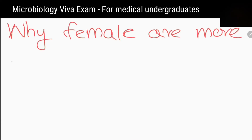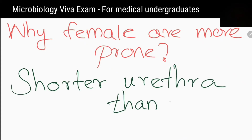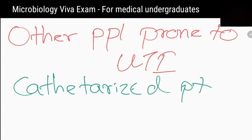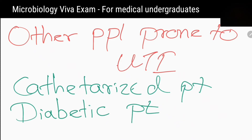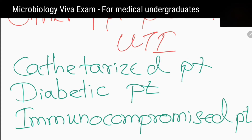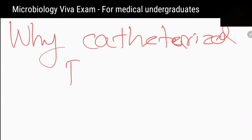Why are females more prone to urinary tract infections? Because the urethra is shorter than in males. Are there any other groups of people who are more prone to urinary tract infections? Catheterized patients, diabetic patients, and immunocompromised patients.